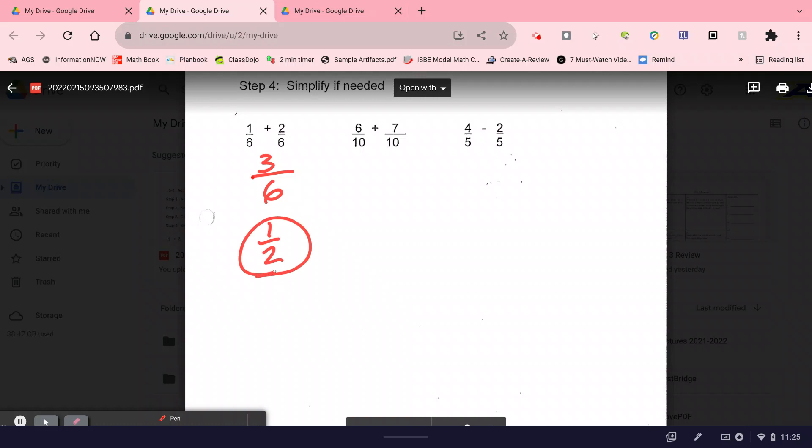Let's look at the next one. 6/10 plus 7/10. Can I go ahead and add the numerator? Yeah. What's 6 plus 7? 13. So we have 13/10. Is that a good final answer? How do I change it to a mixed number? Divide. So the top number goes on the inside. How many times does 10 go into 13? Once. How many is left over? 3. What is my answer? 1 and 3/10.